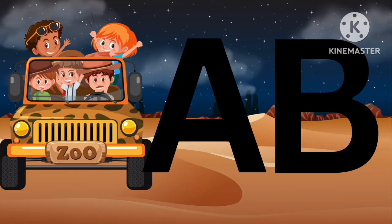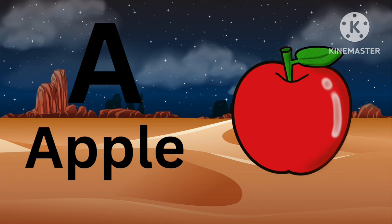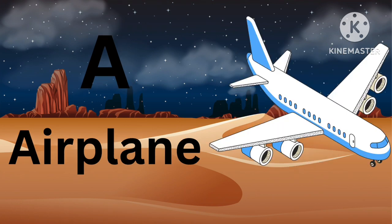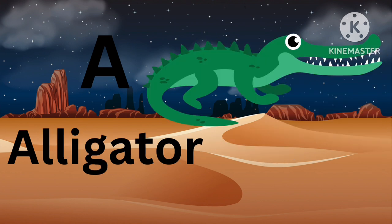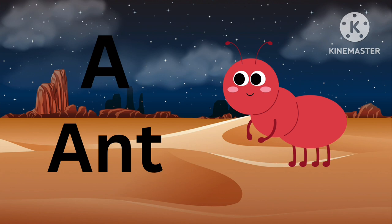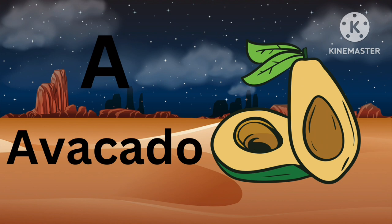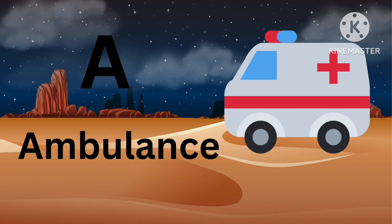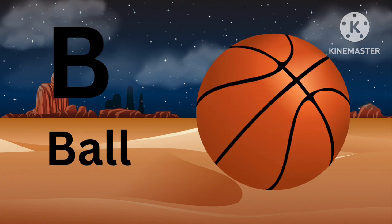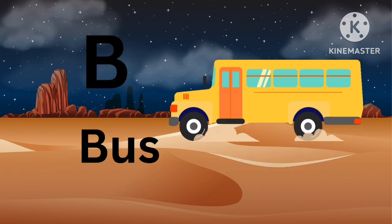Hello kids, welcome back! Let's learn ABCD together. A for Apple, A for Airplane, A for Alligator, A for Ant, A for Avocado, A for Ambulance.